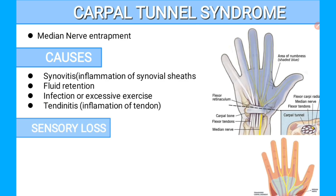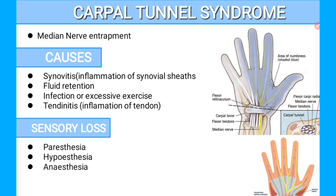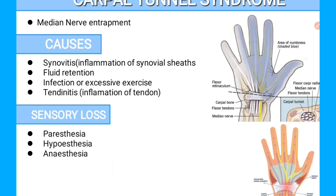With the entrapment of the Median Nerve, we have two kinds of losses. The first one is Sensory Loss and the second one is Motor Loss. When we have a compression of the Median Nerve, the Sensory Loss will include Paresthesia, Hypoesthesia, and Anesthesia. Paresthesia is a tingling sensation, Hypoesthesia is partial sensory loss, and Anesthesia is a complete absence of sensation.